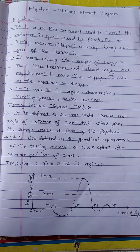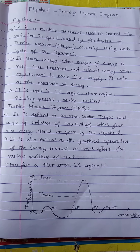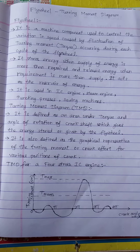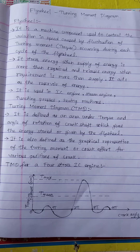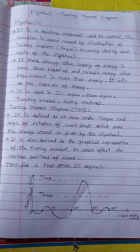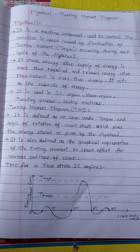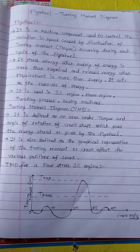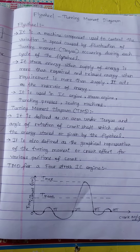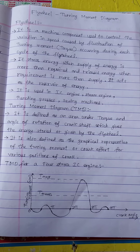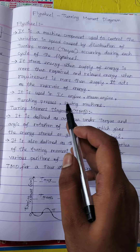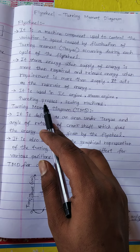Especially in sewing machines, we have seen the flywheel application. In a sewing machine, we have a bigger wheel which is always rotating even though we are not pressing the foot pedal, because it will absorb the energy while we are pressing the pedal and it will release the energy when we need it for stitching. In the same way, we use flywheel in many applications, especially in IC engines, steam engines, punching presses, etc.